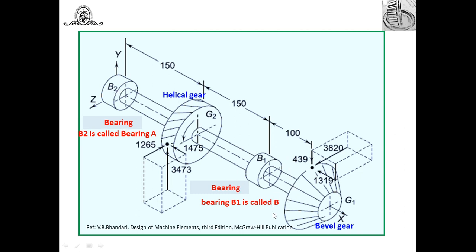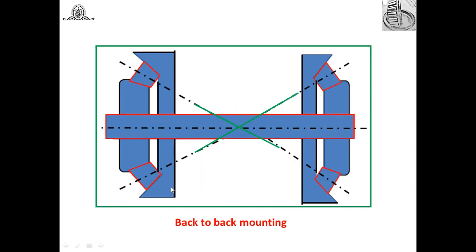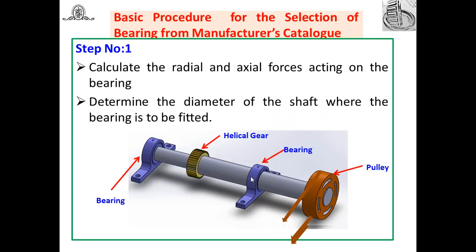Before selecting the bearing we need to decide the mounting arrangement — whether face-to-face or back-to-back mounting. This is required while selecting the bearing, as it affects how we determine the axial load components, as discussed in the earlier session on the taper roller bearing selection procedure.